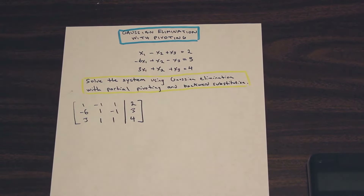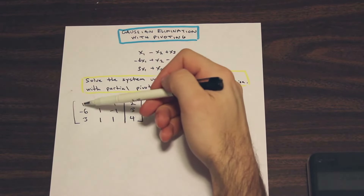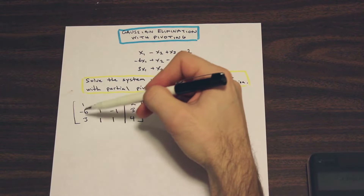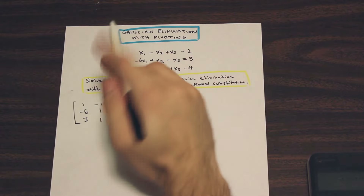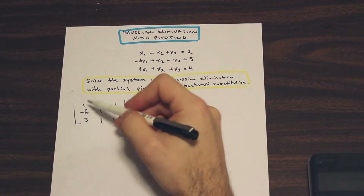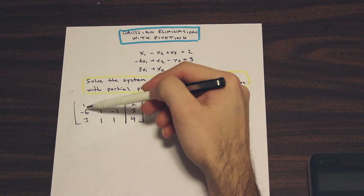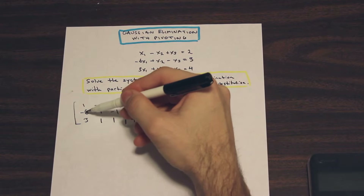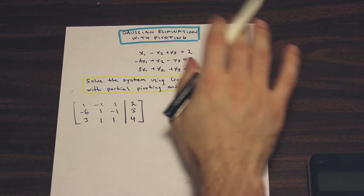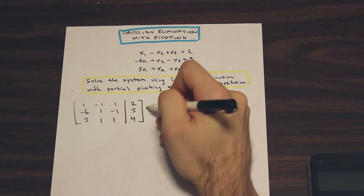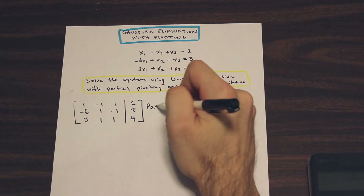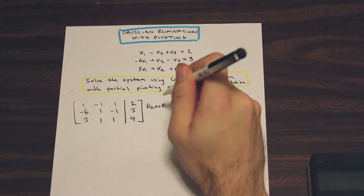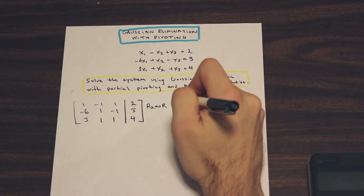Where the partial pivoting part comes in is we're going to look at the first column on the left and look for the largest number in absolute value. It doesn't matter if it's negative or positive — take the absolute value of every number and find the largest one. In this case, the largest number in this column is 6. So we're going to take the row that has the largest number and move it to the top. We're going to swap R2 with R1. It's good in an exam or test situation to write the steps you're doing, just to get full marks.